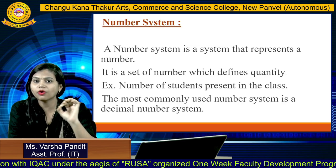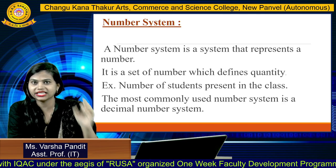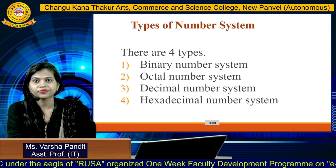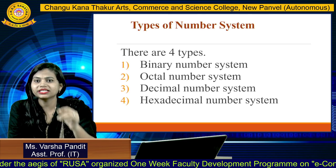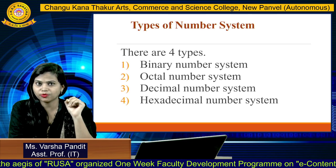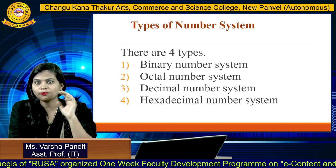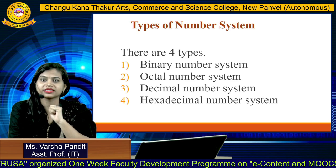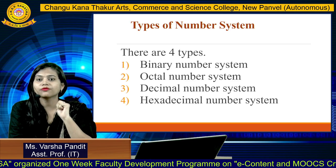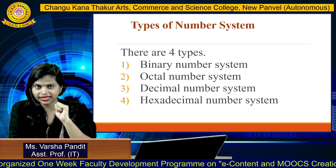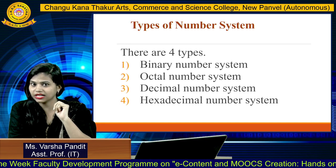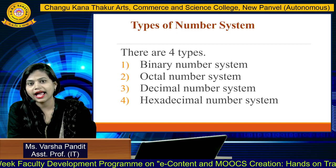Now we'll see some types of number systems. Basically there are four types: the binary number system, the octal number system, the decimal number system, and the hexadecimal number system.